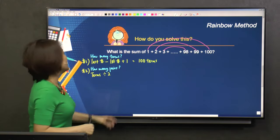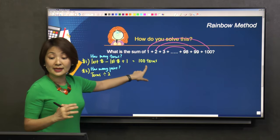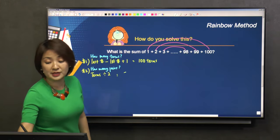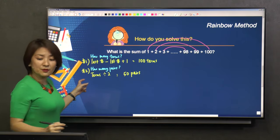2, right? So here, there are 100 terms. I divide by 2, I get 50 pairs. You get that? Now, number 3.